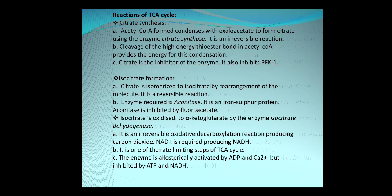The isocitrate formed is oxidized to alpha-ketoglutarate by the enzyme isocitrate dehydrogenase. It is an irreversible reaction involving both oxidation and decarboxylation, producing carbon dioxide, and the cofactor NAD+ is converted to NADH. It is one of the rate-limiting steps of the TCA cycle. Isocitrate dehydrogenase is allosterically activated by ADP and calcium ions but inhibited by ATP and NADH. In many exams, the ion responsible for activation of TCA cycle enzymes is calcium ion.